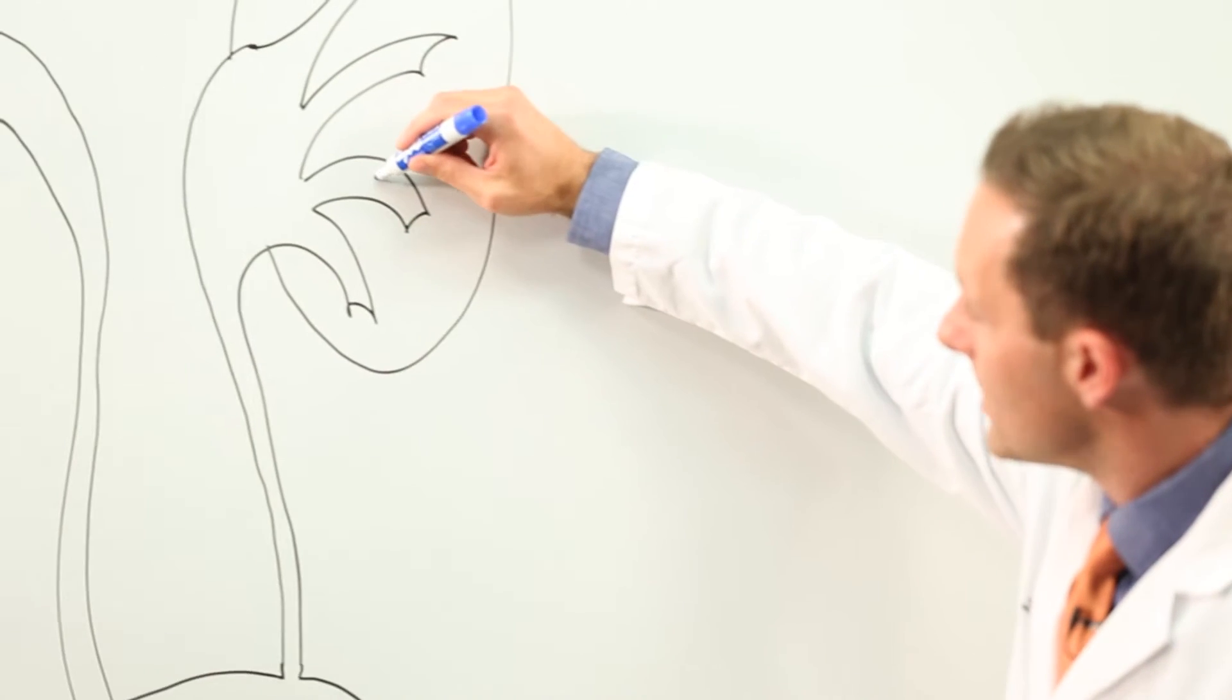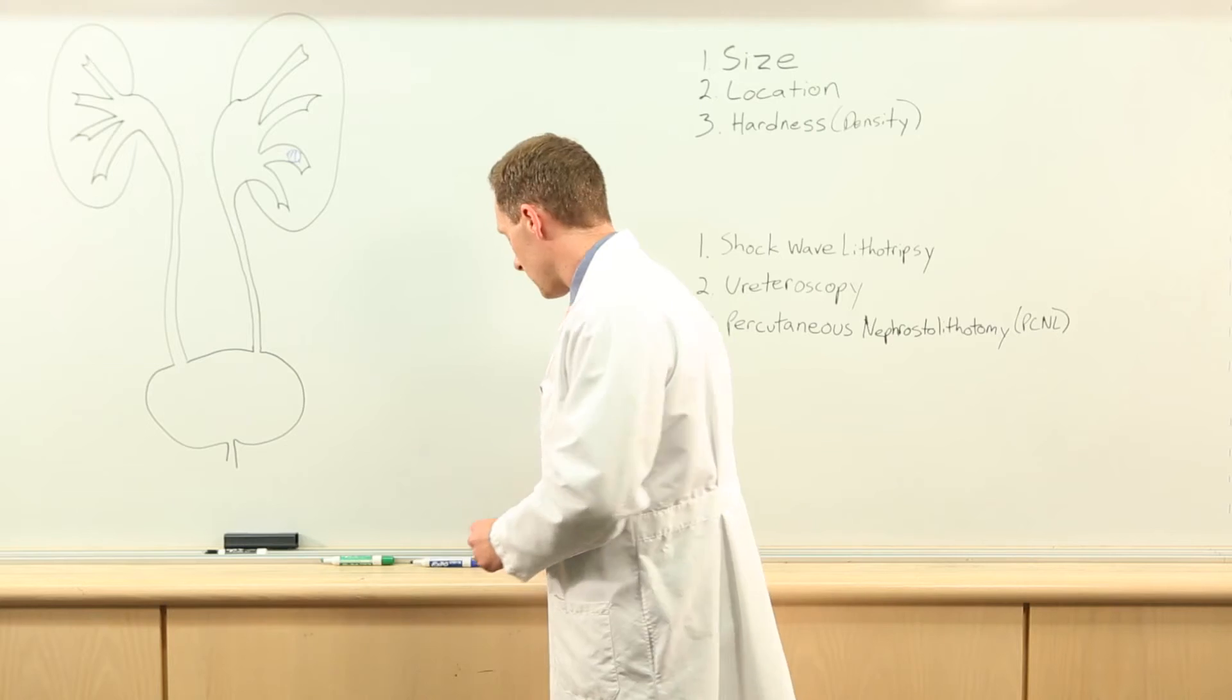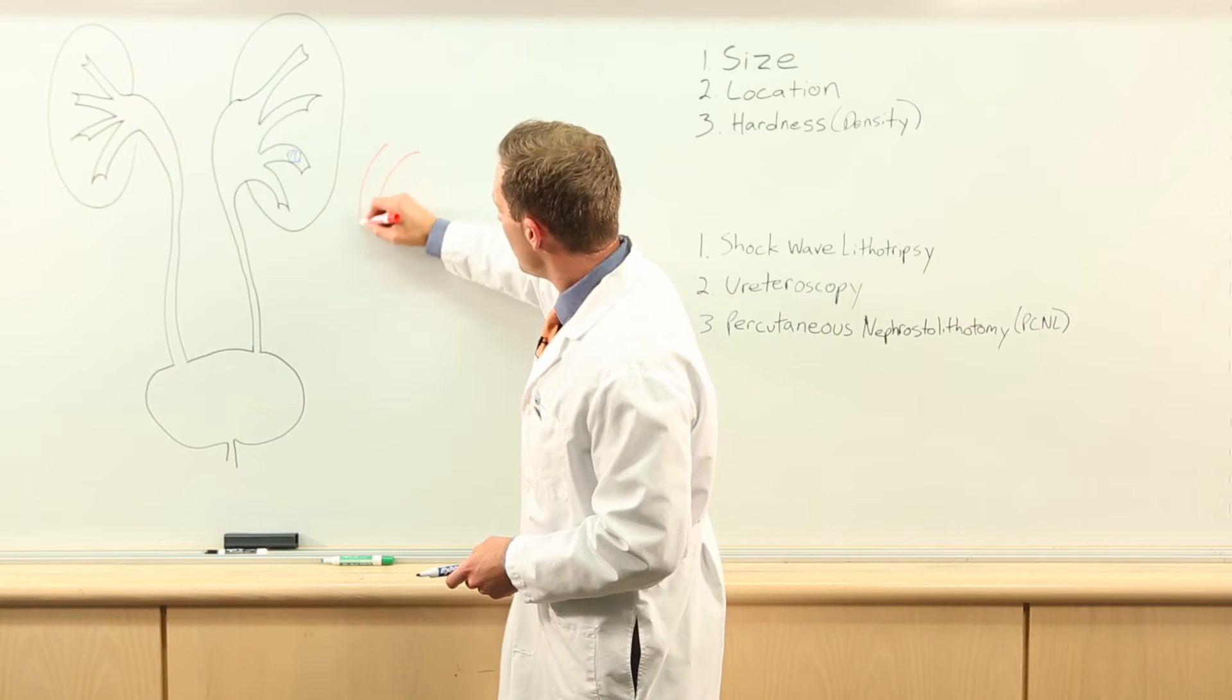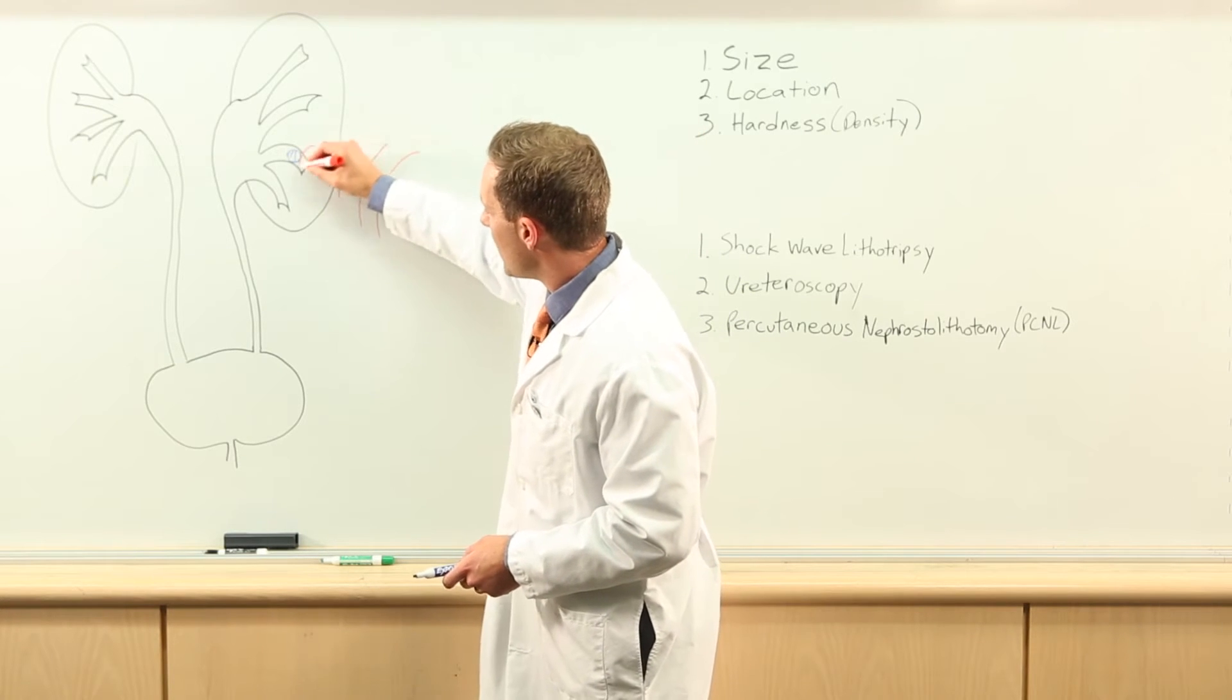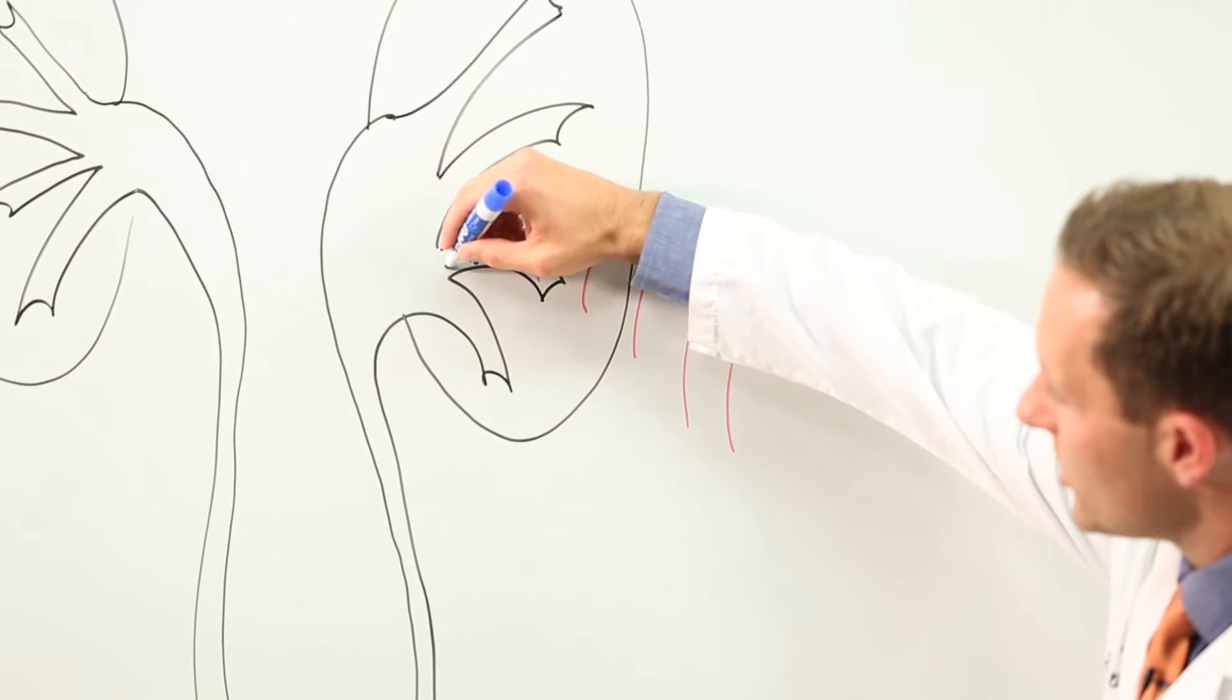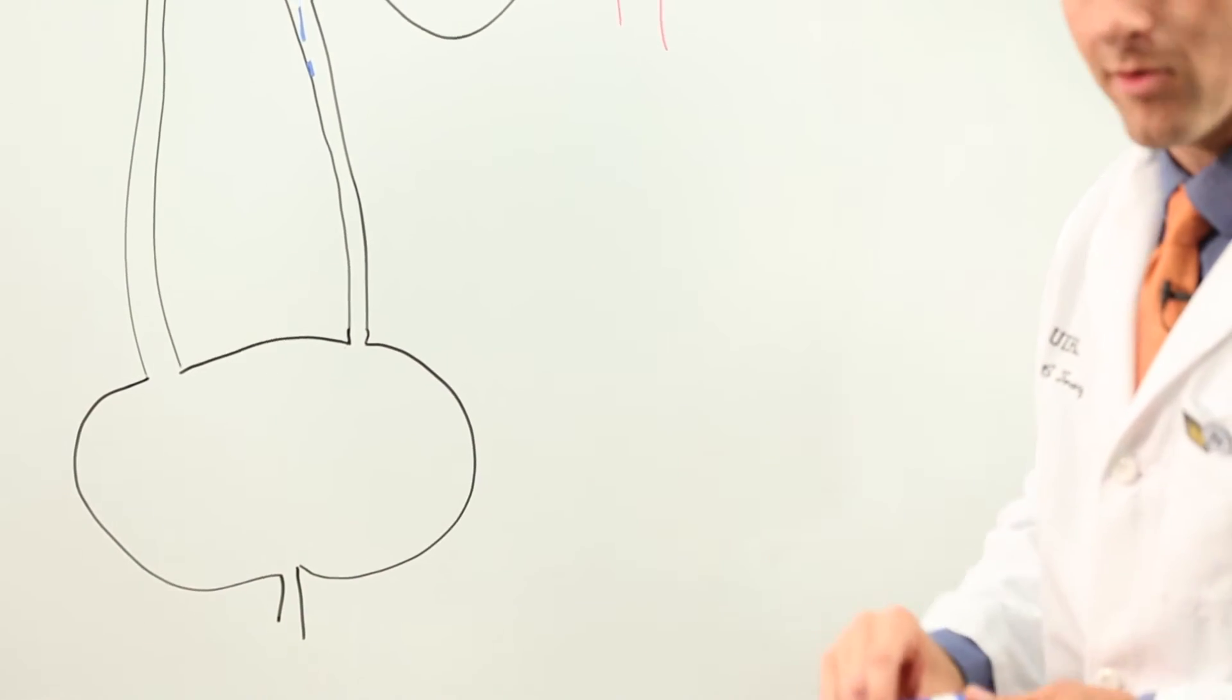The most common type of treatment for kidney stones is what's called shock wave lithotripsy. This is a procedure where shock waves are passed through the patient's back up to the level of the kidney stone. It then makes small pieces of stone which can then pass on their own down the bladder and out the urethra.